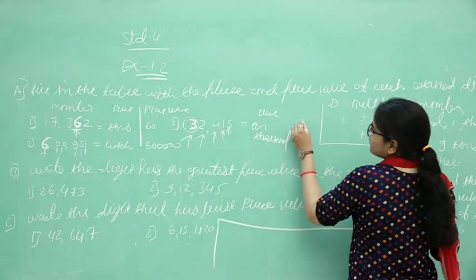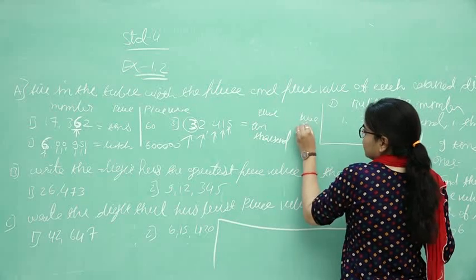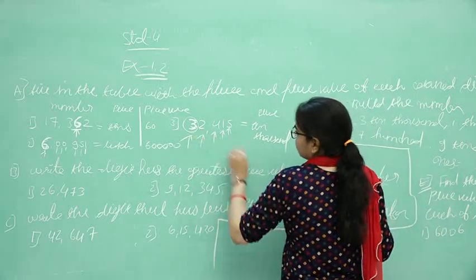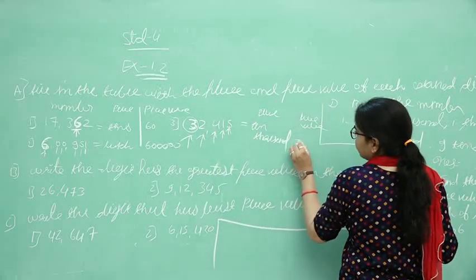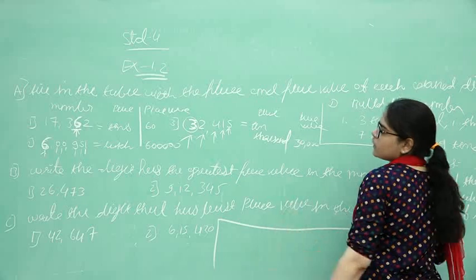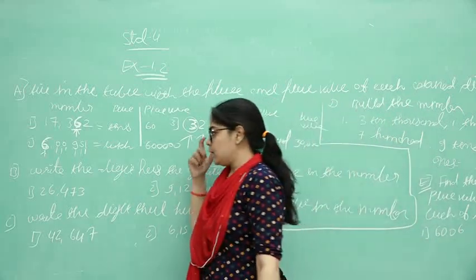And place value? Then place value of 3. After 3, how many digits are there? 1, 2, 3, and 4. Then put here 4 zeros. 4 zeros means 30,000.